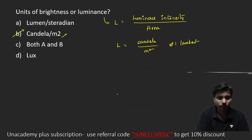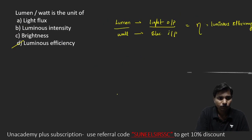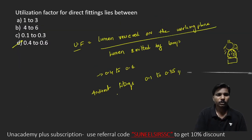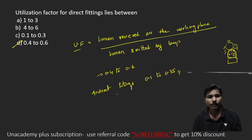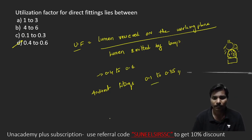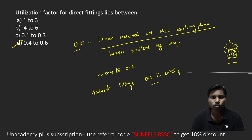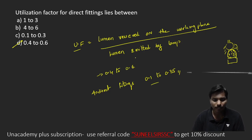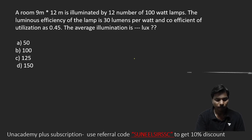Up to this point we have completed the utilization factor. For direct fitting, it is 0.4 to 0.6; for indirect fitting, it is 0.1 to 0.35. Utilization factor means lumens received on the working plane divided by lumens emitted by the lamp. Now coming to the next question.